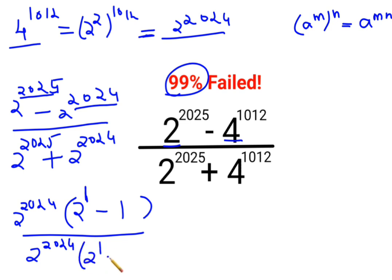I am left with 2 raised to 1 plus 1. So this is cancelled. So we are left with 2 minus 1 upon 2 plus 1. So answer for this question is supposed to be 1 upon 3.